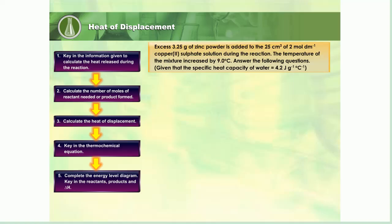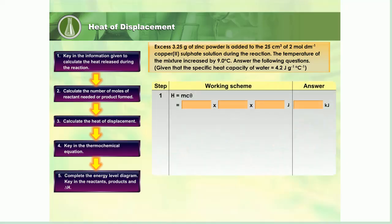Study the flowchart. Use this to guide you in solving the problem involving heat of displacement. 3.25 grams of zinc powder is added to the 25 cubic centimeters of 2 mole per decimeter copper(II) sulfate solution during the reaction. The temperature of the mixture increased by 9 degrees Celsius. Answer the following questions. Key in your answer in the boxes provided.